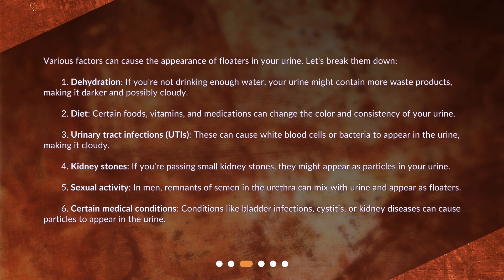Various factors can cause the appearance of floaters in your urine. Let's break them down. First, dehydration: if you're not drinking enough water, your urine might contain more waste products, making it darker and possibly cloudy. Second, diet: certain foods, vitamins, and medications can change the color and consistency of your urine.